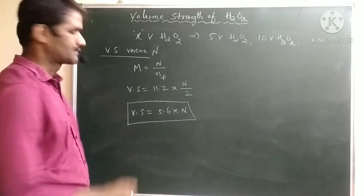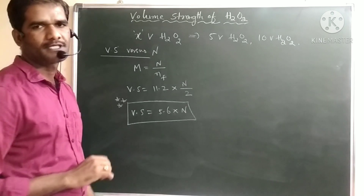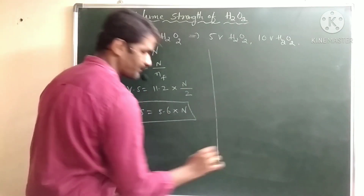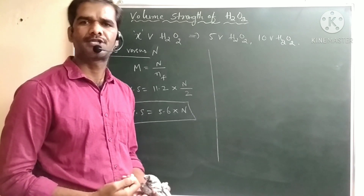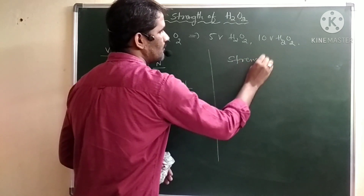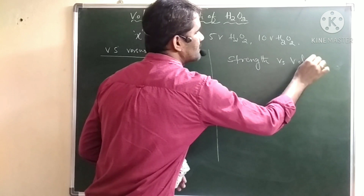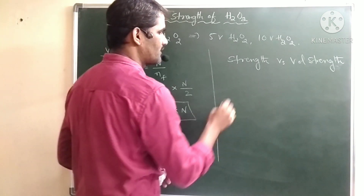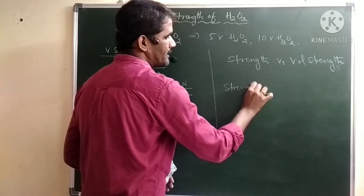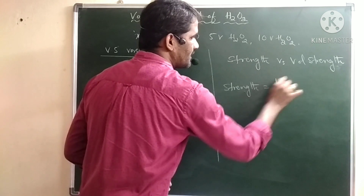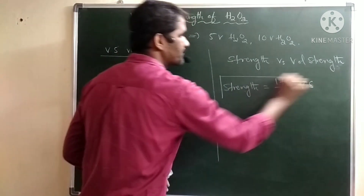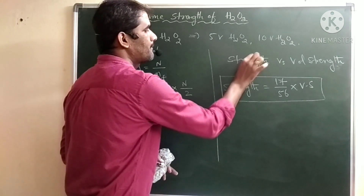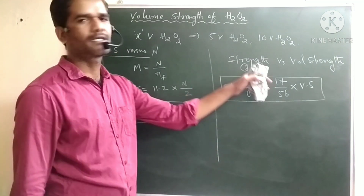Or: normality × 5.6. This is the relation between volume strength and normality. Next, other relations: volume strength versus strength of solution. Strength is expressed in grams per liter. The formula is: strength of solution = (17/56) × volume strength.